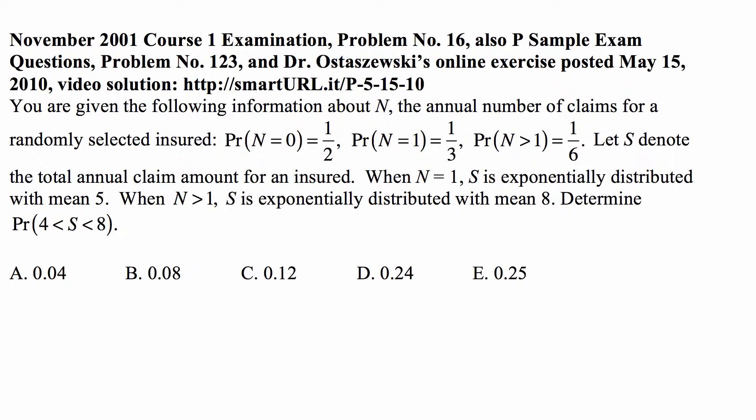Here is a problem for April 27, 2018, for Exam P on probability. You are given the following information about N, the annual number of claims for a randomly selected insured.